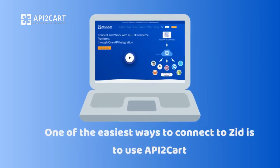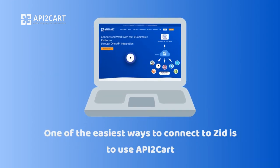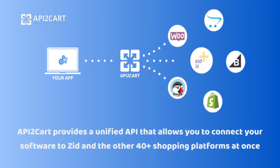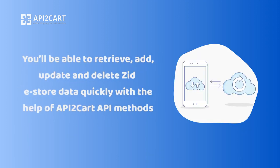One of the easiest ways to connect to Zid is to use API2Cart. API2Cart provides a unified API that allows you to connect your software to Zid and the other 40-plus shopping platforms at once. You'll be able to retrieve, add, update, and delete Zid e-store data quickly with the help of API2Cart API methods.